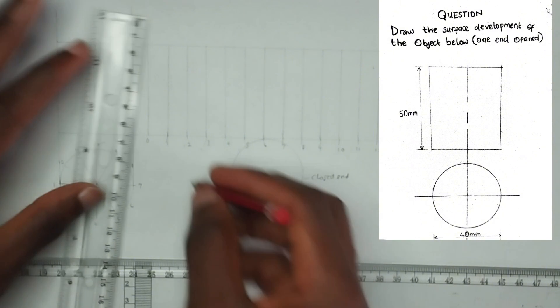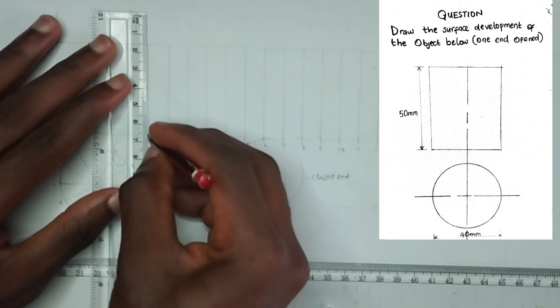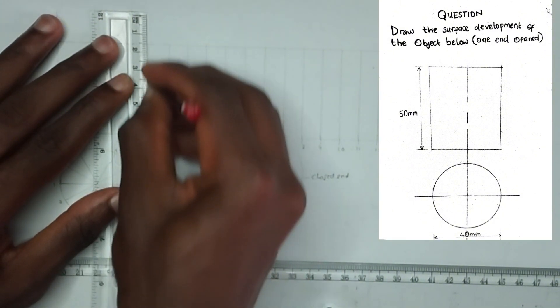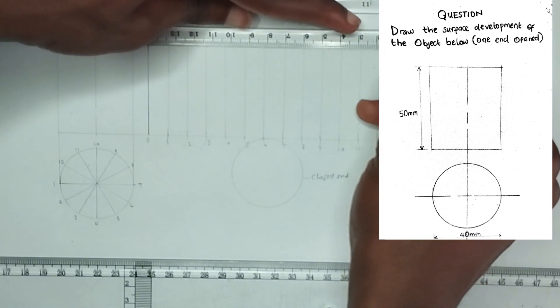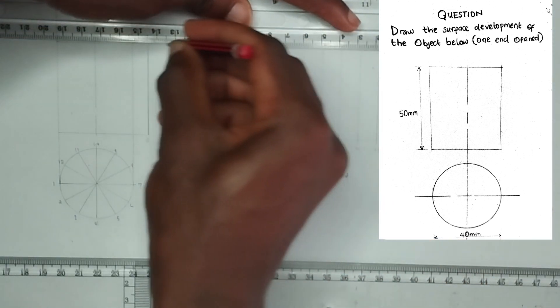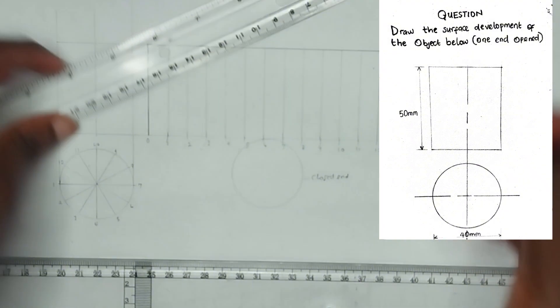Now what we're going to do next is to thicken out the edges. We'll thicken out this part. Now we are not thickening out the lines in the middle, we are to thicken out only the edge.